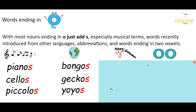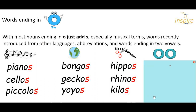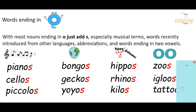These words have come from other languages, so bongos, geckos, and yo-yos — just add an S. If the word's been shortened, so hippopotamus down to hippo, we just add the S. Rhinoceros down to rhino, we just add an S. Kilogram to kilo, we just add an S. Shortened words, just an S. Words ending in two vowels, again we just add an S: zoos, igloos, tattoos. Try and remember these pictures — they might help you when you're writing.